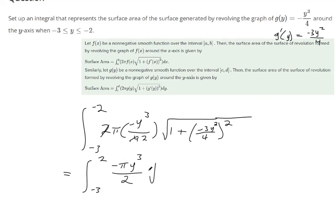And then inside the radical is 1 plus all this stuff squared. That's going to be 9, because negative 3 squared is positive 9. Y to the 4th over 16.